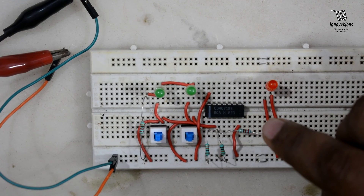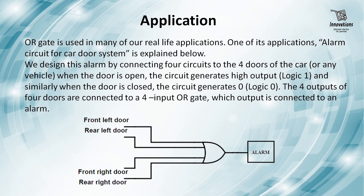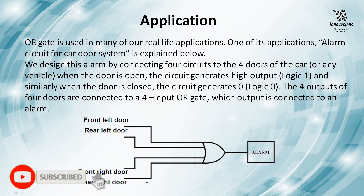Now let us move on to the application of an OR gate. OR gates are used in many real-life applications, one of which is a car door alarm circuit. When any car door is open and the car is started, an alarm rings. Four inputs of the OR gate are connected to the four car doors — front left, rear left, front right, and rear right. If any door is open, its status is high, and the OR gate triggers the alarm. This is a practical application of the OR gate.